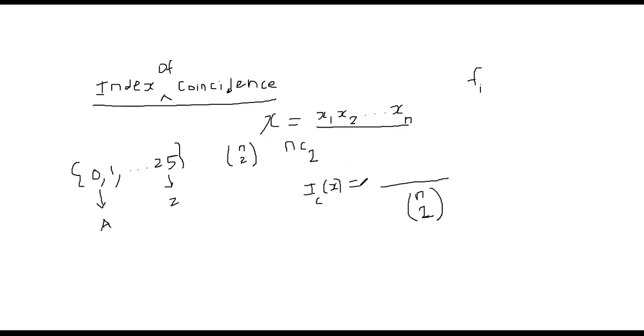We will be able to write this as sigma summation i equal to 0 through 25 because we have 26 letters in our English alphabet. You can easily generalize it for non-English and other things as well. So i equal to 0 all the way to 25 and we will have f_i choose 2, meaning choose two items from f_i items.